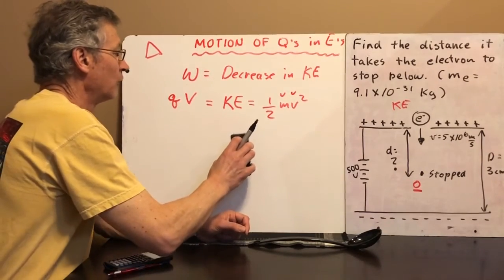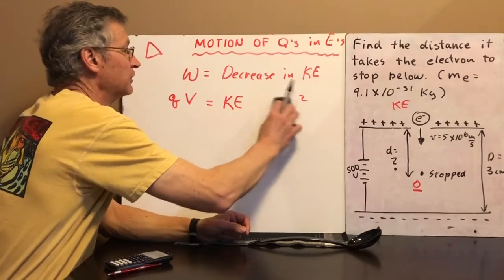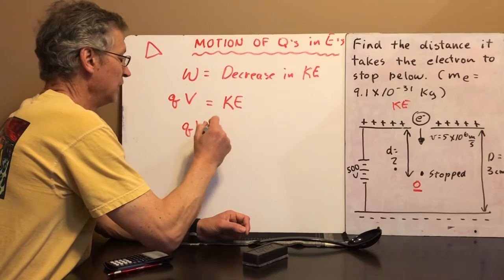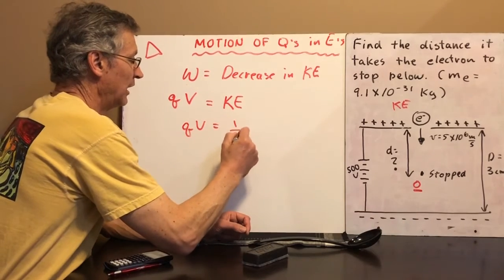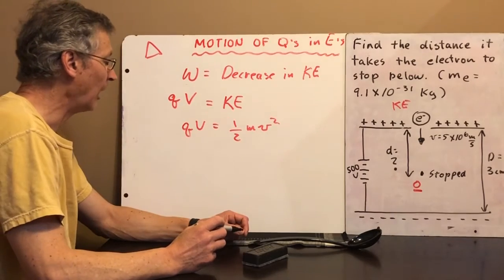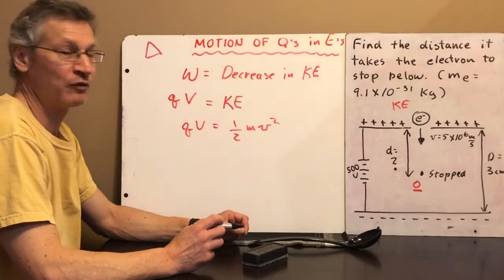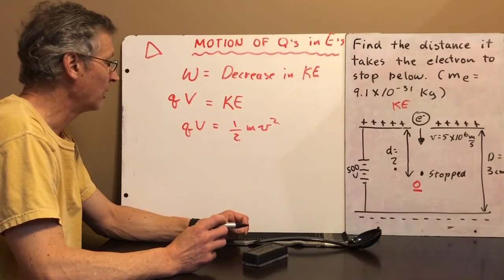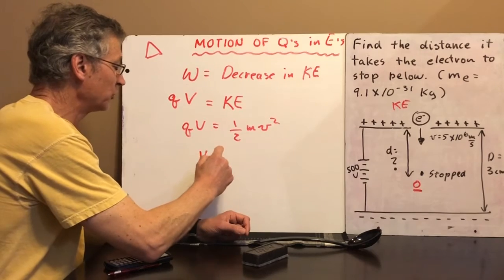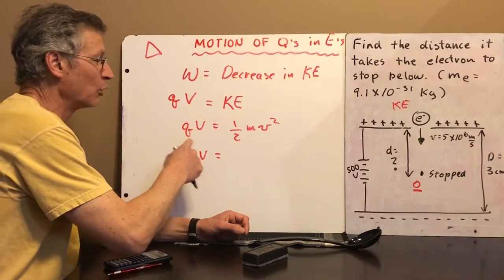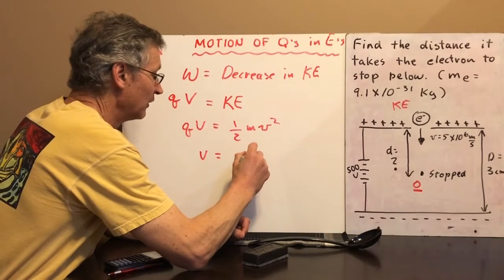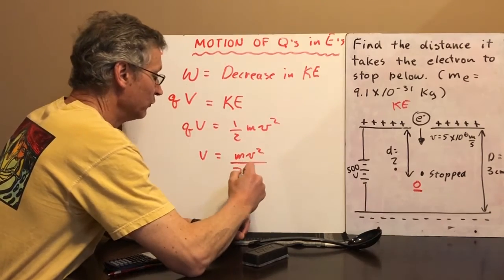So let's go ahead and let's do that. I'm just going to rewrite this ever so slightly. So I get qv is equal to ke. So I got qv is equal to one half mv squared. I'm going to solve this equation for v here. So when I solve this equation for v, the q is going to go over to the other side. It's going to slide downstairs. So I'm looking like this, mv squared over 2q.